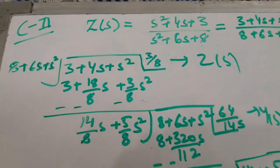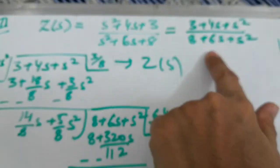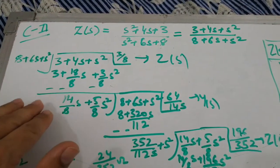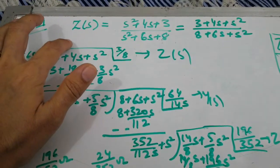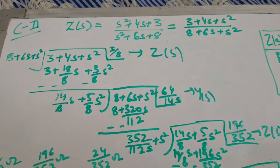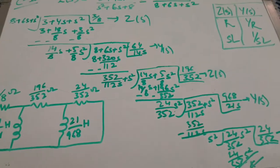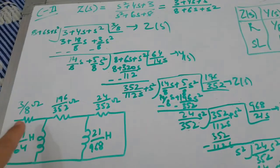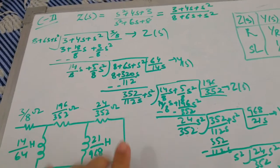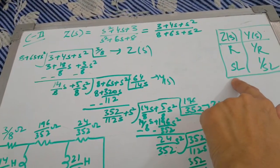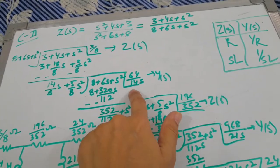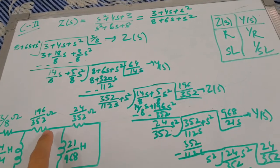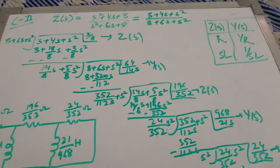Now lastly we come to Cauer 2 form. For Cauer 2 form, the Z terms should be arranged in ascending powers of s. After arranging in ascending powers of s we carry on our CFE, and here the quotients are not coming out negative, so there is no need for inverting Z(s). The CFE is carried out as usual for Z(s). After getting all the CFE coefficients for Z(s), since I carried out the CFE on Z(s), the first branch is Z, then Y, then Z, then Y, then Z, with all coefficients taken from Z column and Y from Y column. We can see that values work out to 14/64 and similarly 21/968.